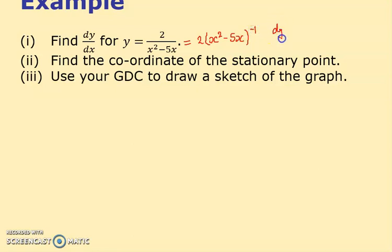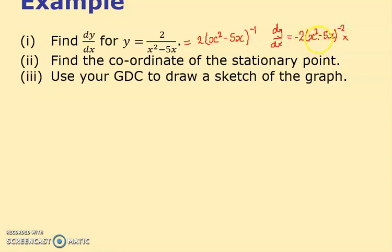When you do that, you can use the chain rule: bring down the power, times minus two lots of (x² - 5x), look up the power to minus two. Don't forget to then multiply by the differential of the inside, which is 2x - 5.